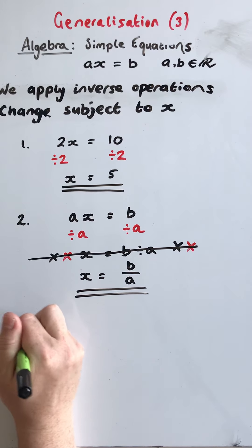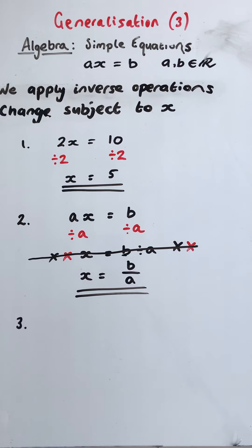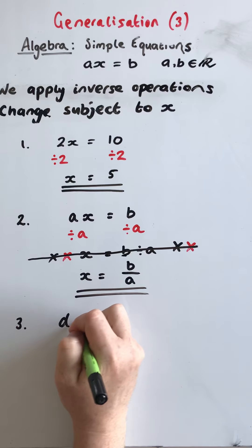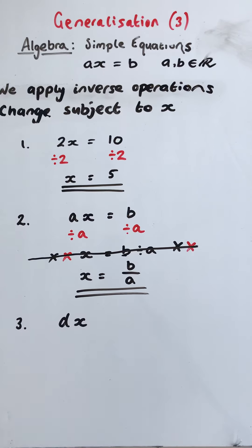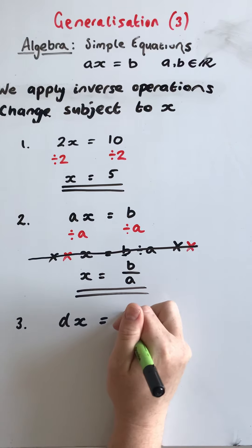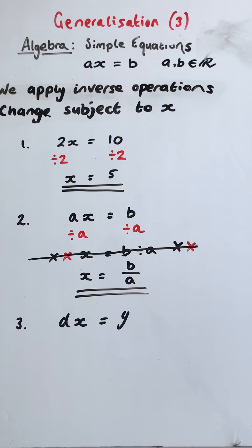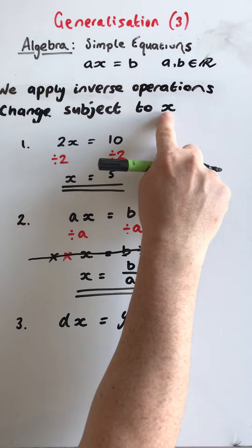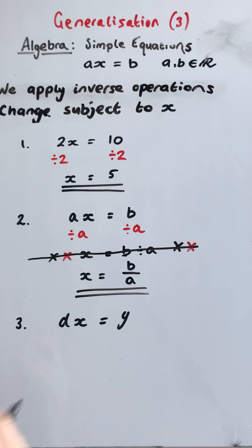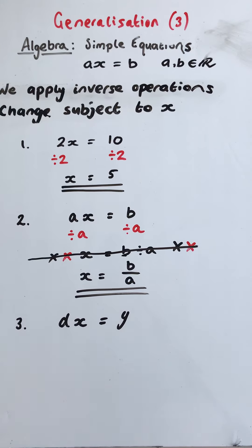What if it's not a and b? I think by convention we just choose the first few letters in the alphabet. We avoid certain ones so that they're not misinterpreted as something else. So what if it was d? And let's just say it was y. Now we're solving for x. We're changing the subject to x. We'll do some videos later on where we're solving for different letters. So what's happening to x? It's been multiplied by d.